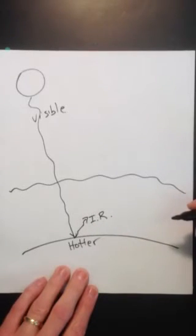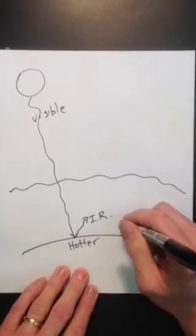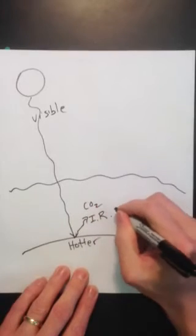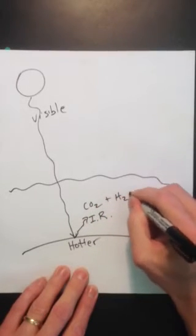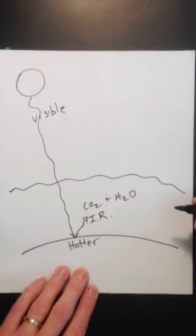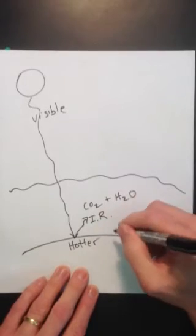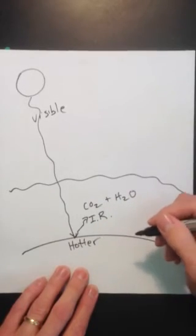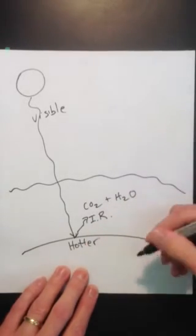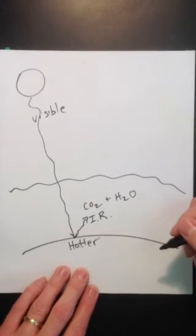Our atmosphere is not at all transparent to infrared light. It's absorbed by the CO2 and H2O in our atmosphere, and so that warms the atmosphere. The atmosphere is actually heated from below - at least the troposphere part of the atmosphere is heated from below.